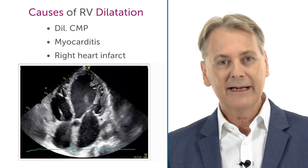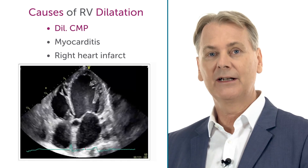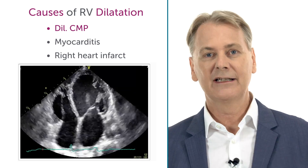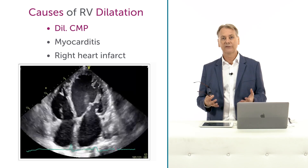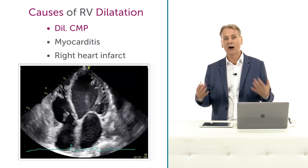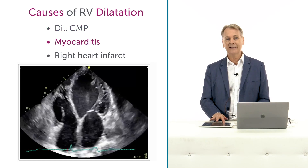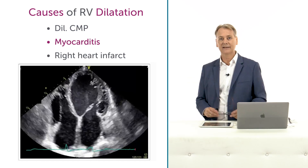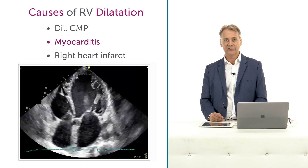In patients with dilated cardiomyopathy, either because they have increased pulmonary pressures or because the right ventricle was involved in the cardiomyopathy as well. In myocarditis, you might have isolated myocarditis of the right ventricle as well.